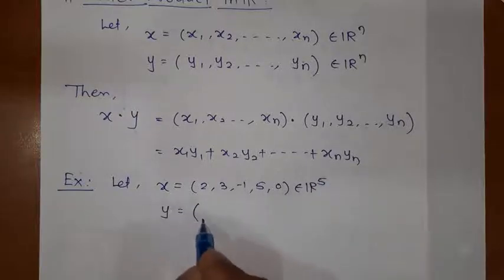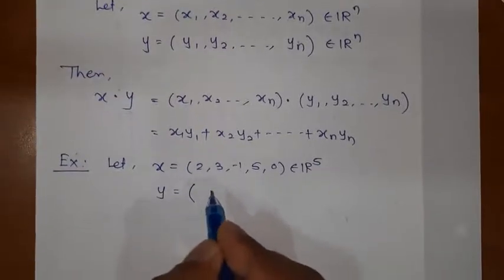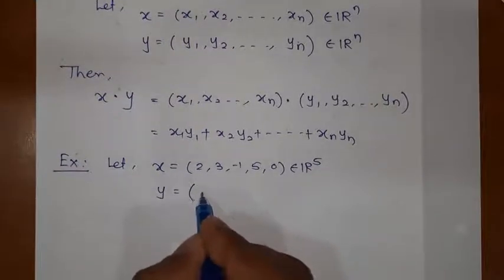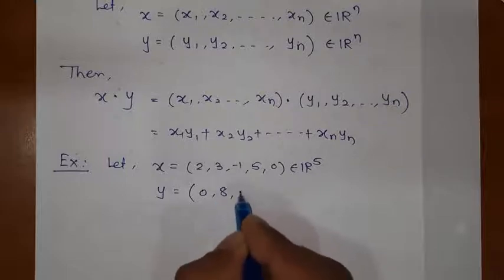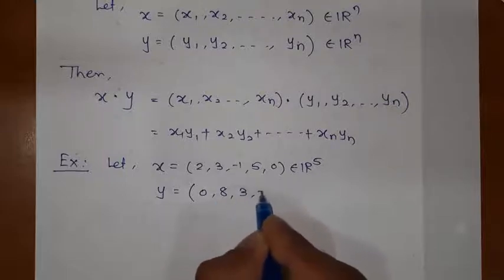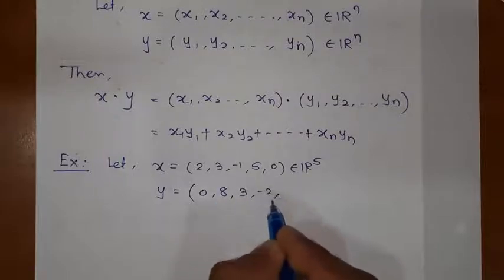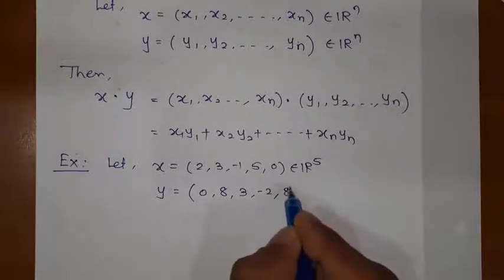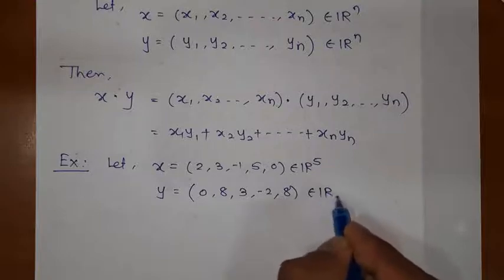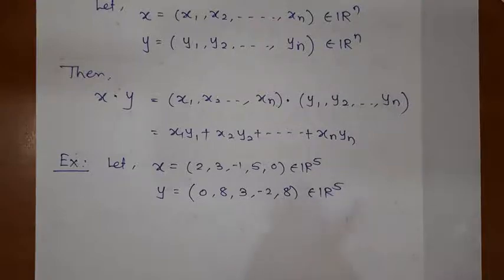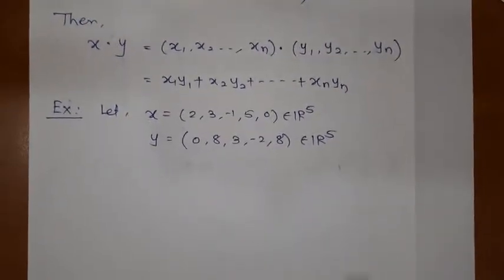Let us take one more point. Suppose Y is 0, 8, 3, minus 2, and 8. This is the second element of R5. Now I am going to take the inner product, or you can say the dot product.